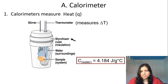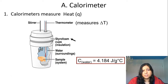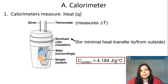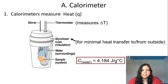The thermometer measures temperature — specifically the change in temperature — because we take the final temperature and the initial temperature of the water inside the calorimeter. We use two styrofoam cups so that there is minimal heat transfer to and from the outside. Styrofoam is a great insulator; it resists the movement of energy.